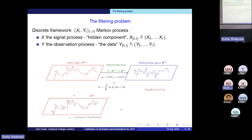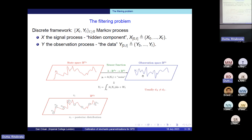I normally explain what the filtering problem is, but there is no time. The filtering problem aims to estimate a hidden component. Pictorially, I'm presenting here a state space model which takes value in some high dimensional state — we're currently working with a million dimensions or thereabouts — and then you have some partial observation of this hidden state.